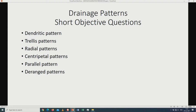Also looking at drainage patterns. When we talk about drainage patterns, we are talking about how the rivers are arranged, which is influenced by the underlying rock structure. We are looking at the dendritic pattern, trellis pattern, radial pattern, centripetal pattern, parallel pattern, and trellis pattern as well as the rectangular pattern. In total we have seven river patterns.